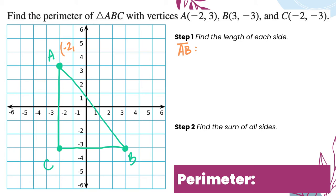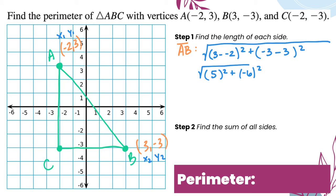I know that A is negative 2, 3 and B is 3, negative 3. So I'm going to assign x1, y1, x2, y2. This is why we reminded ourselves what the distance formula was. I'm going to plug that in: x2 minus x1 squared plus y2 minus y1 squared. So that's 5 squared plus negative 6 squared, which will be 25 plus 36, which gives me the square root of 61, about 7.8.